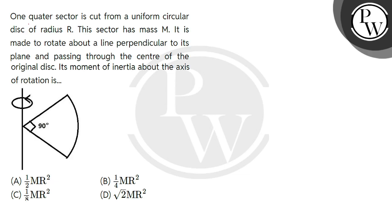Hello bachaw, let's read the question. One quarter sector is cut from a uniform circular disc of radius R.